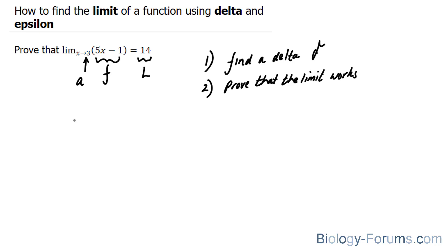So what we want is the following: the absolute value of f of x minus L is less than epsilon when zero is less than the absolute value of x minus a and is less than delta.